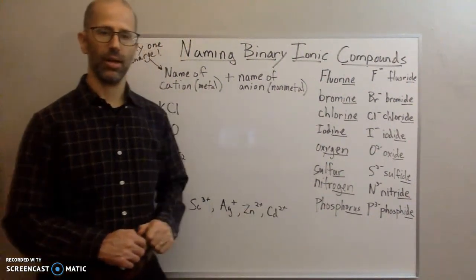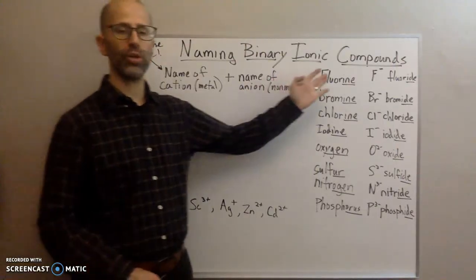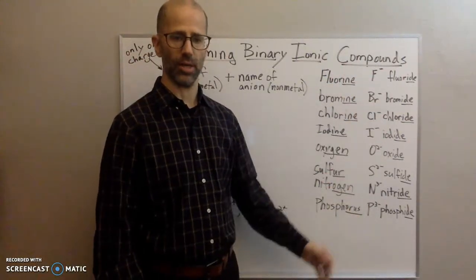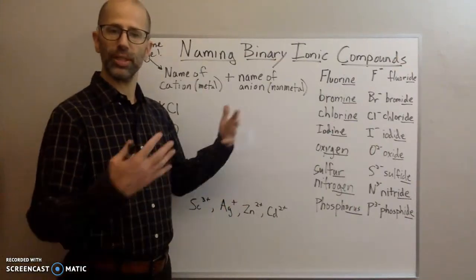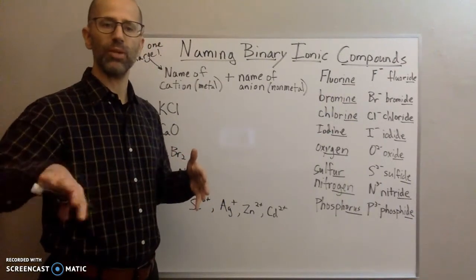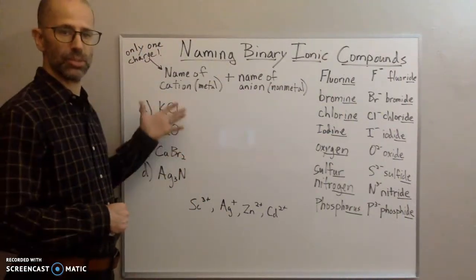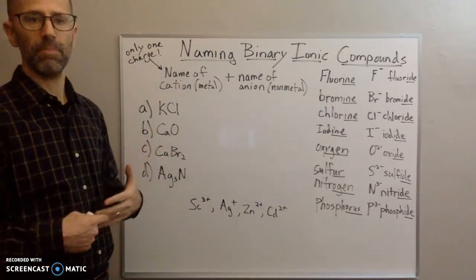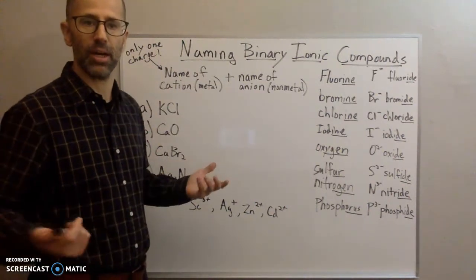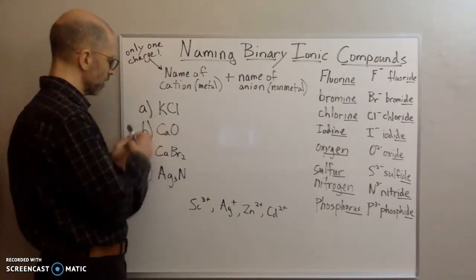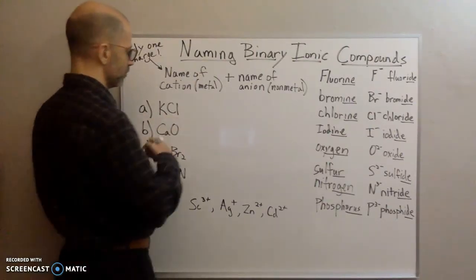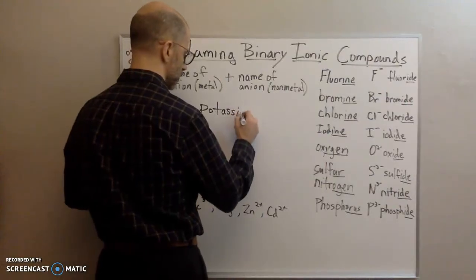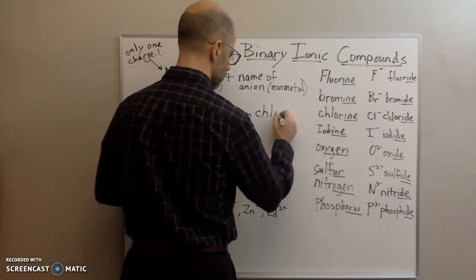So for a binary ionic compound, once you know the names of your ions you just put them together — dropping the word 'ion.' For example, the potassium ion is just 'potassium,' the chloride ion is just 'chloride' — put them together and you get potassium chloride. That's the name of the compound: potassium chloride.